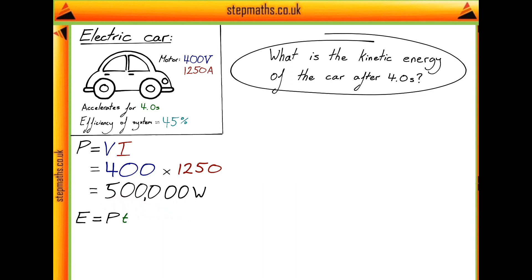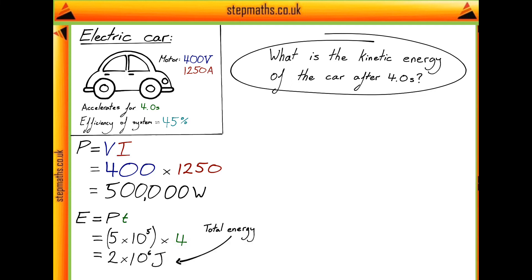To calculate the energy which the motor produces in our four seconds of acceleration, we multiply the value of power — which I've written here in standard form — by the time period of four seconds. This gives us a total energy produced by the motor of 2 times 10 to the 6 joules.